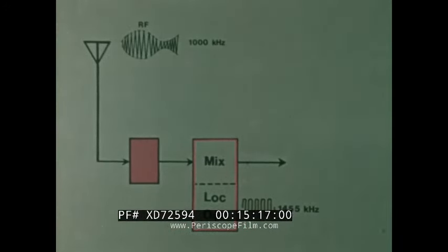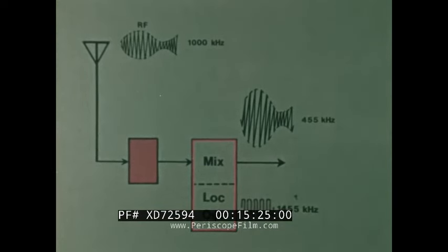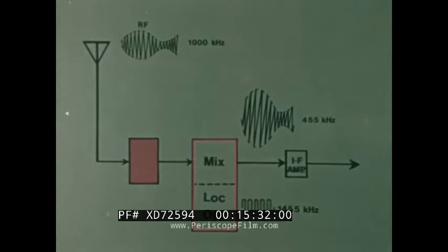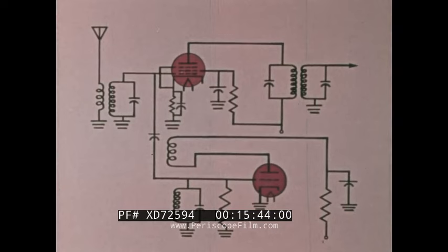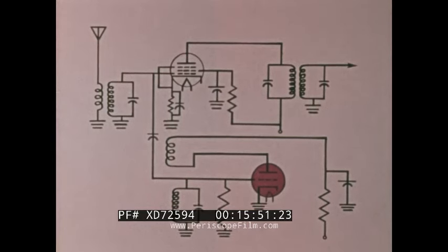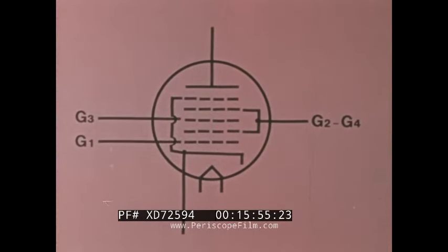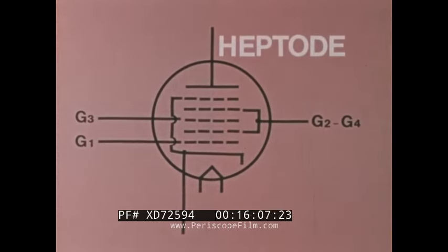In a superheterodyne receiver, the incoming RF signal is mixed with a different frequency produced in the receiver itself. This new frequency — the IF — is equal to the difference between the frequency of the incoming signal and the frequency produced in the set. This lower difference, or beat frequency, is then amplified. There are two types of frequency changing circuits. In one, the local frequency is produced in a triode tube and is combined with the incoming signal in another tube called the mixer. Another system uses one tube — usually a heptode with five grids. The first two grids act as the grid and anode of a triode to produce the local frequency. The incoming signal is fed to one of the other grids, so the heptode does the job of two tubes: an oscillator and a mixer.